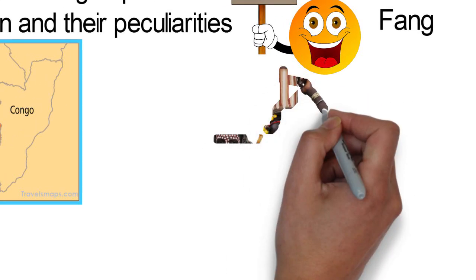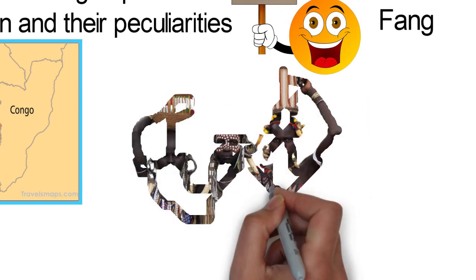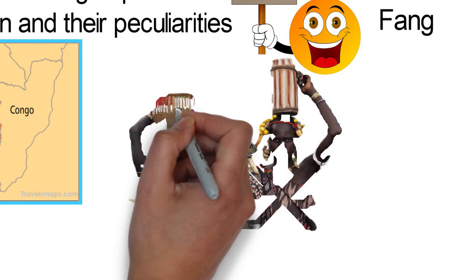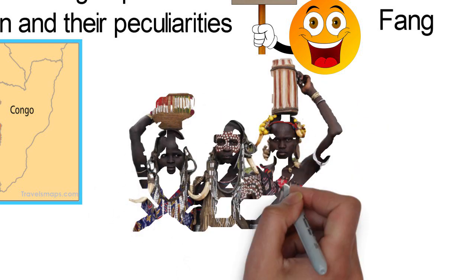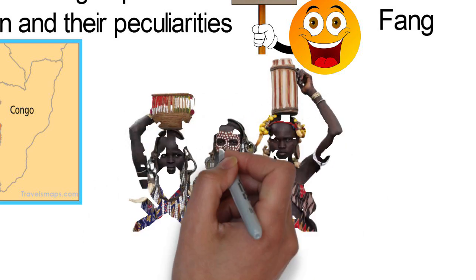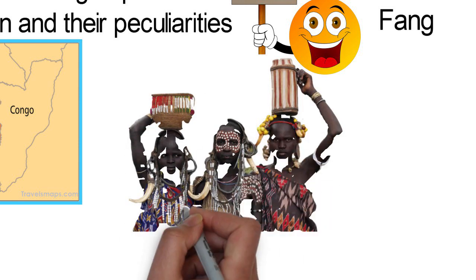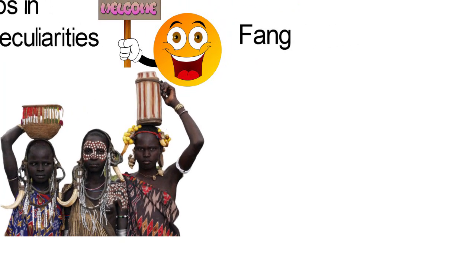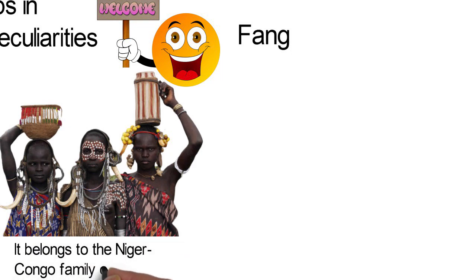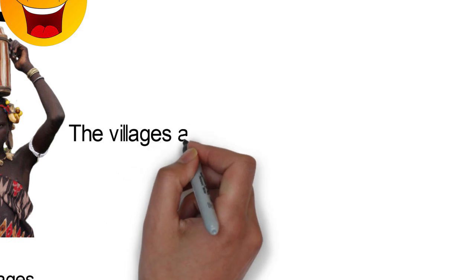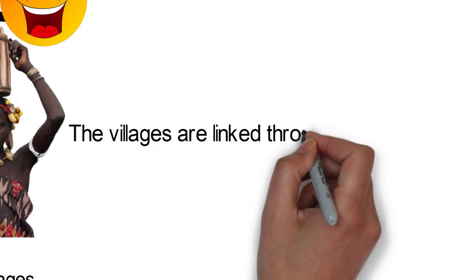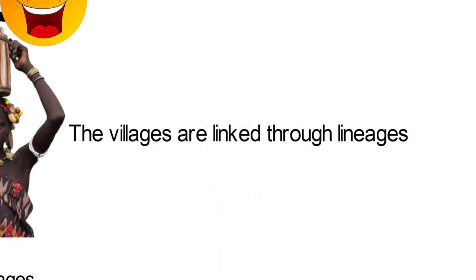Fang. The Fang ethnic group is the largest ethnic group in Gabon, making up about a quarter of the population or 25%. They speak the Fang language, also known as Pahuni. It belongs to the Niger-Congo family of languages. The Fang practice a patrilineal kinship social structure.